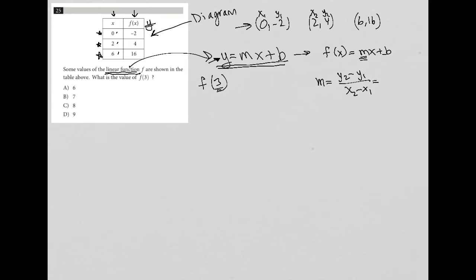what I'm left with here is Y2 is 4 minus Y1 is negative 2. So it would be 4 minus negative 2. And then X2 is 2 minus X1, which is 0. So I have 4 minus negative 2, which becomes 4 plus 2, which is 6. 2 minus 0 is 2. 6 divided by 2 equals 3. Therefore my slope, M, is equal to 3. That's one part of my function.